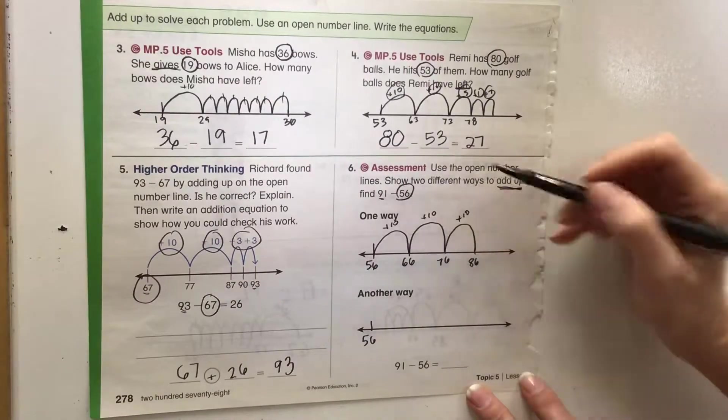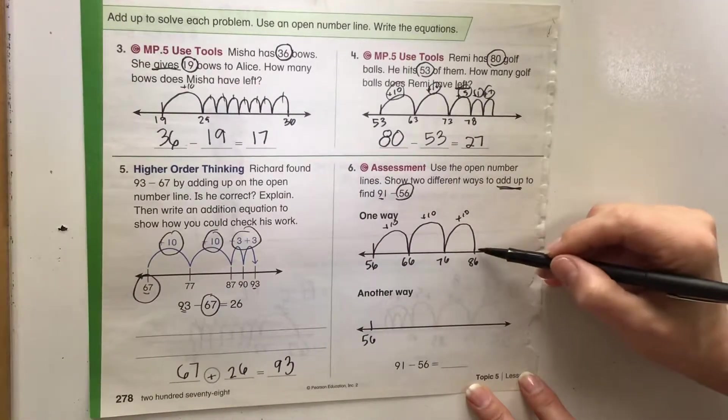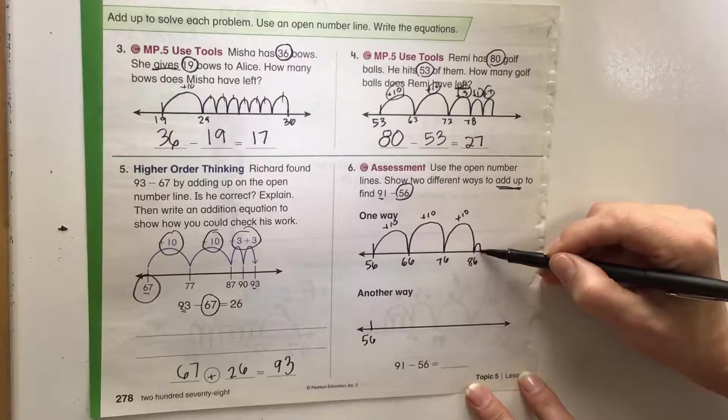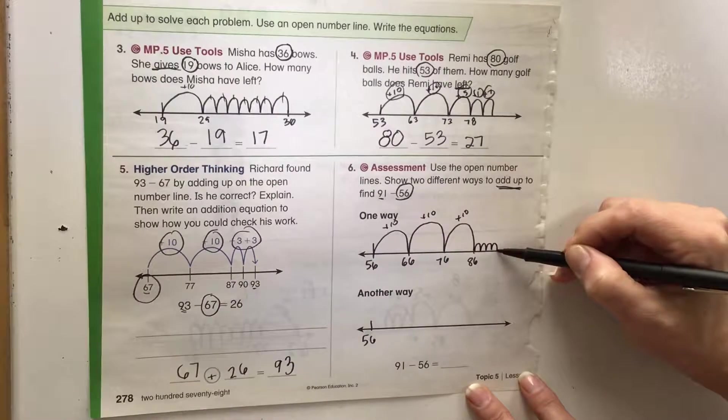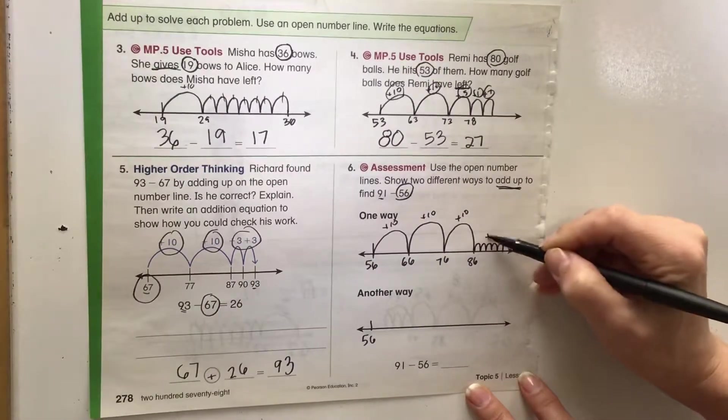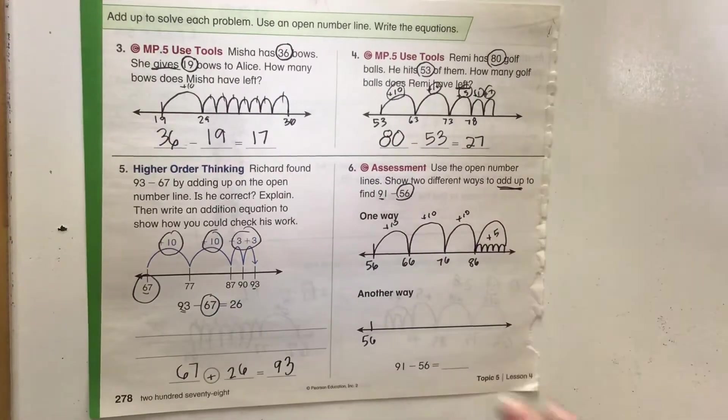Now what I could do, we need to get to 91. 86, 87, 88, 89, 90, 91. We can do that by a group of five or we can do it by five ones.